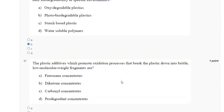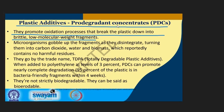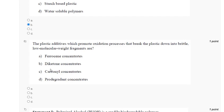Question 6: The plastic additive which promotes the oxidation process that breaks plastic down into brittle low-molecular-weight fragments is: ferrocene concentrate; decatone concentrate; carbonyl concentrate; or prodegradant concentrate. The explanation: prodegradant concentrate promotes the oxidation process that breaks plastic down into brittle low-molecular-weight fragments. The correct answer to question 6 is option D.